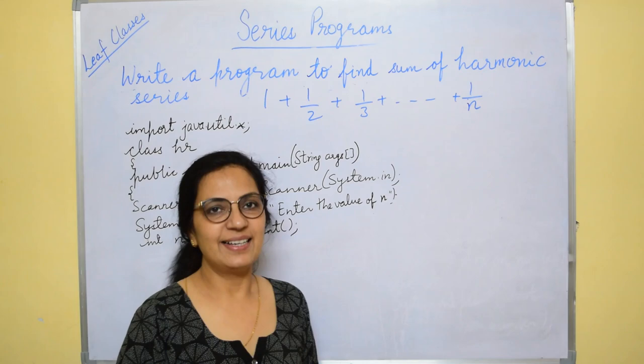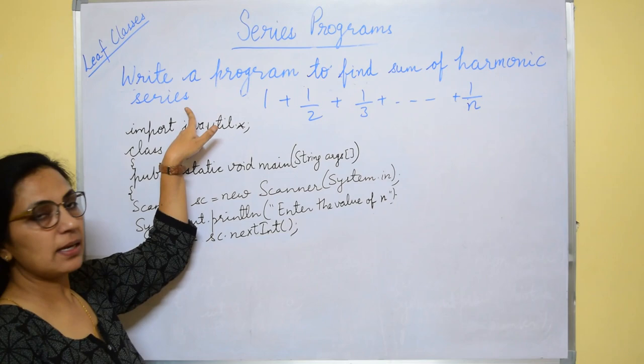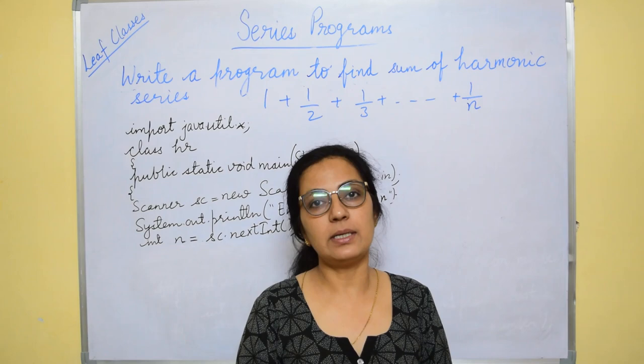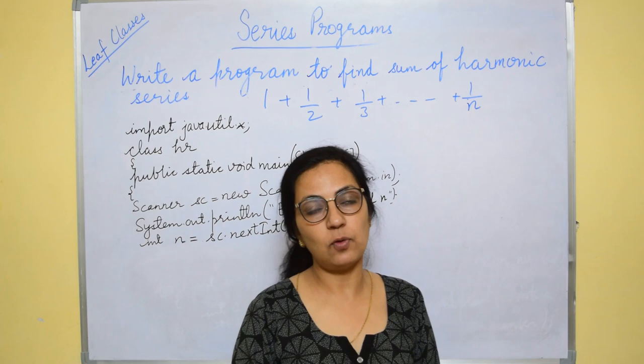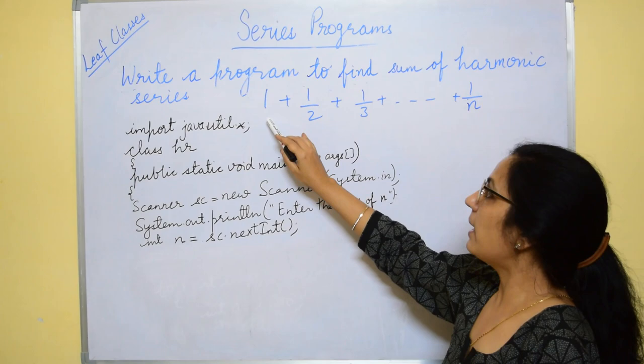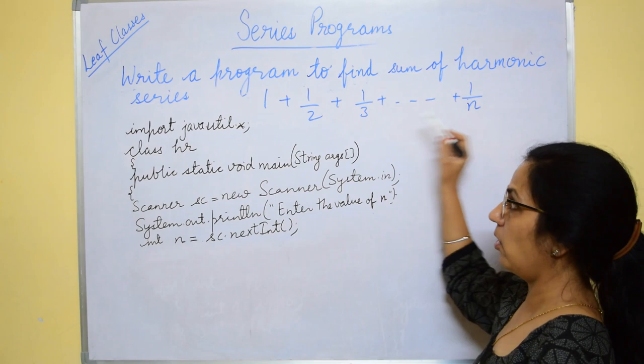So let's start. The first question says to write a program to find the sum of harmonic series and this series is 1 plus 1 by 2 plus 1 by 3 up to 1 by n. Previous video also I told you that you observe the terms and check how the next term is coming, which pattern it is following. So here also if we observe this series, the numerator is 1 in all the terms and denominator is starting from 1, 2, 3, 4 up to n.